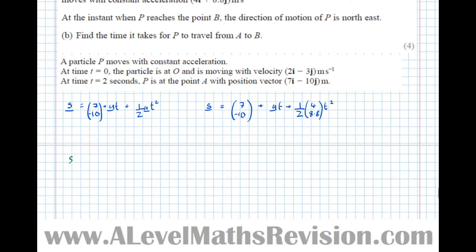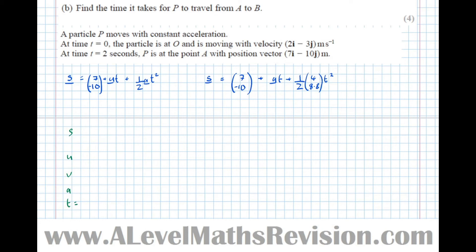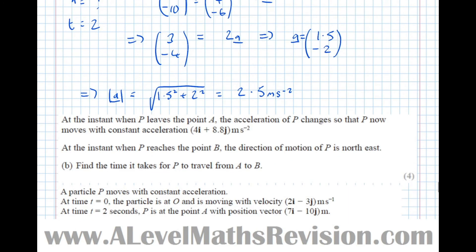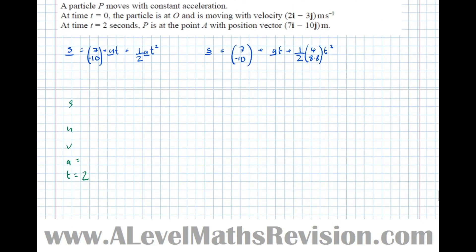For the motion between the origin and A, S, U, V, A, T. We know that it hits A when the time was 2. We know the acceleration. We worked out the acceleration vector as 1.5 minus 2.